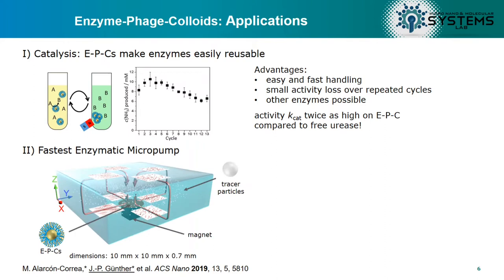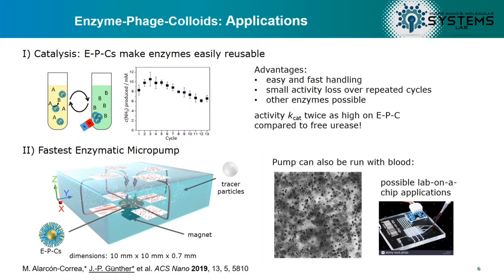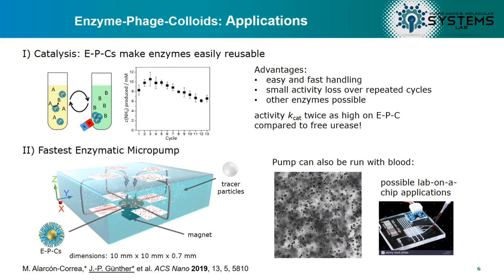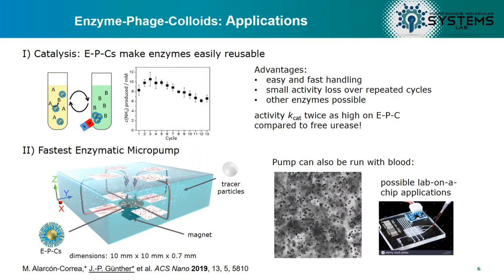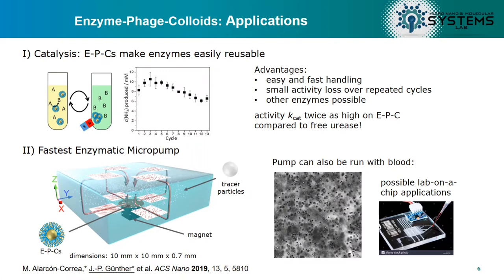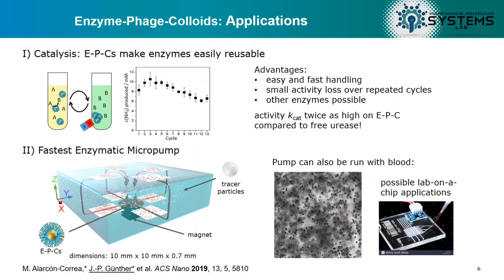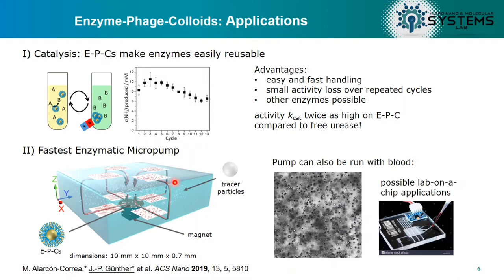The second application is an enzymatic micropump. In these devices the enzyme is gathered on the bottom of a microcontainer — we did this with a tiny magnet to aggregate the particles to the surface — and via density differences a convective flow starts, pumping tracer particles around. We also found that instead of using an artificial solution with urea and tracer particles, we can use blood, since there is a natural urea concentration in blood which can be used as fuel. This could theoretically be used in a lab-on-a-chip device to pump blood to different sensors.